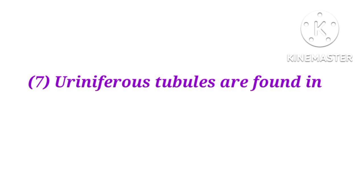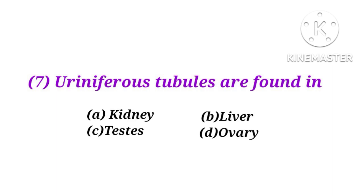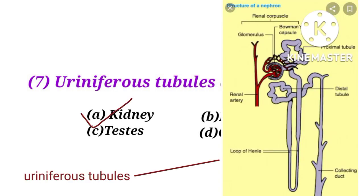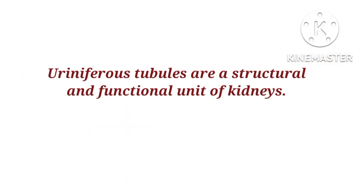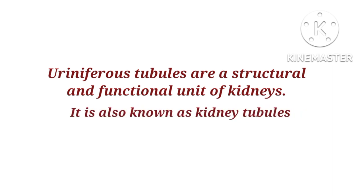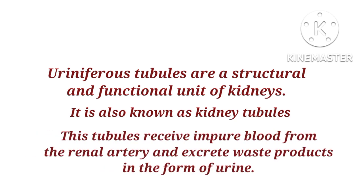Number 7. Uriniferous tubules are found in the kidney, liver, testis, or ovary? The answer is A — kidney. Uriniferous tubules are the structural and functional unit of kidneys, also known as kidney tubules. These tubules receive impure blood from the renal artery and excrete waste products in the form of urine.